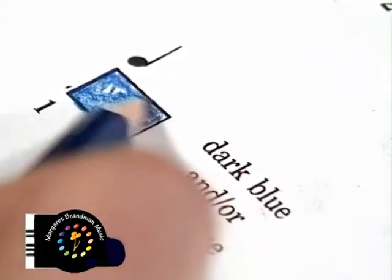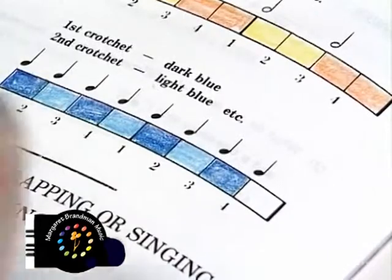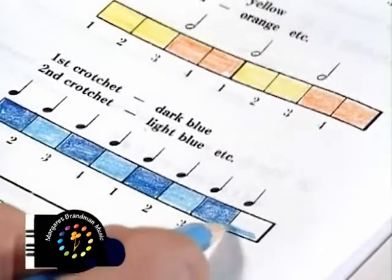To represent a one count note, color one box in dark blue. If a second one count note follows immediately, color the next box in light blue.